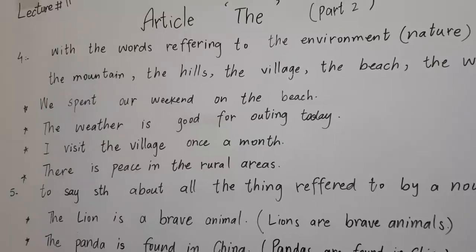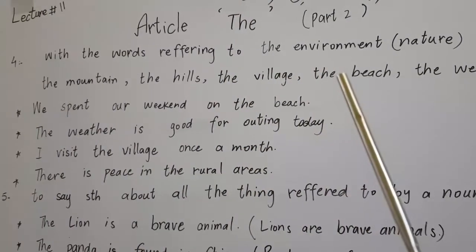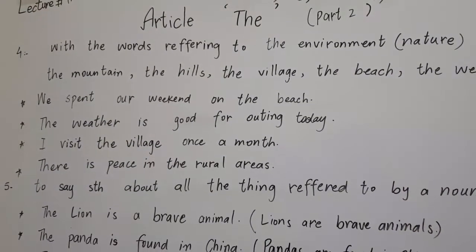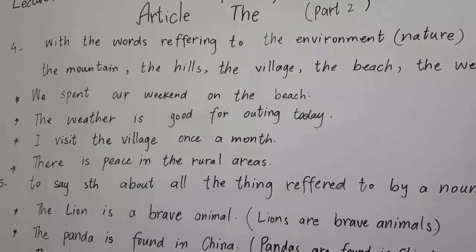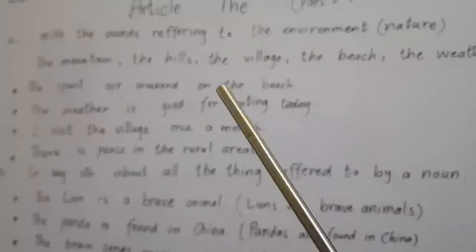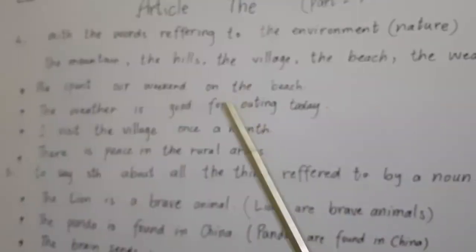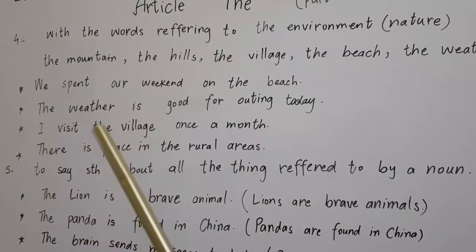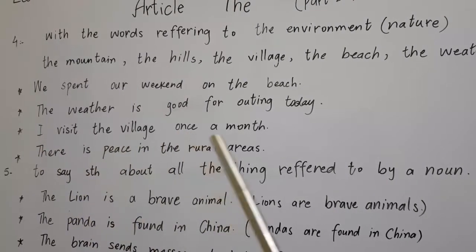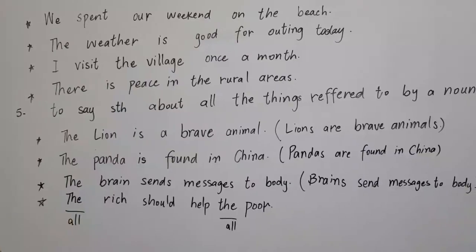Rule number 4: we use 'the' with words referring to the environment — things found in nature. For example: the mountain, the hill, the village, the beach, the weather. 'We spent our weekend on the beach.' 'The weather is good for outing today.' 'I visit the village once a month.' 'There is peace in the rural areas.'